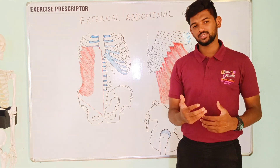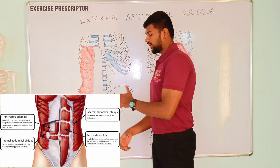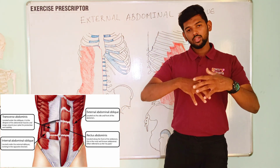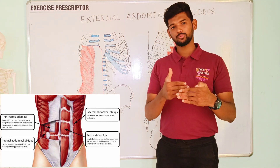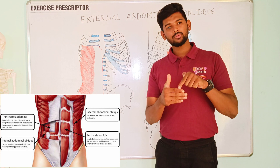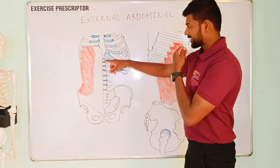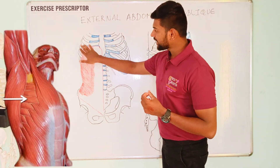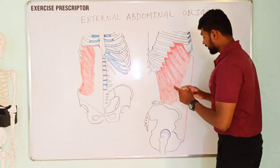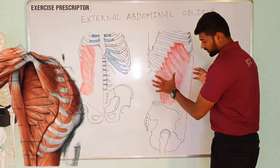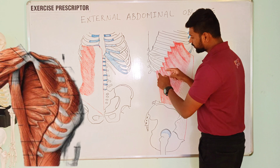Regarding relationship to other structures: the external abdominal oblique is situated lateral to the rectus abdominis and is one of the most superficial muscles among all four abdominal muscle groups. Deep to the external abdominal oblique is the internal abdominal oblique, and deep to that is the transverse abdominis. The external abdominal oblique also integrates with the serratus anterior at ribs 5 to 9, and with the latissimus dorsi laterally at ribs 10 to 12.